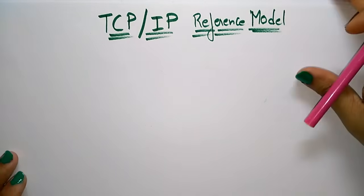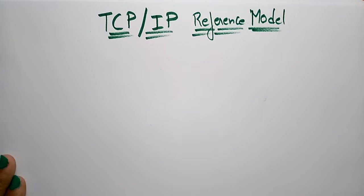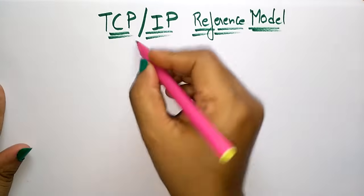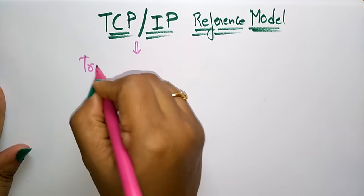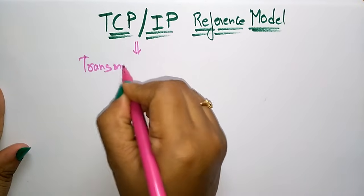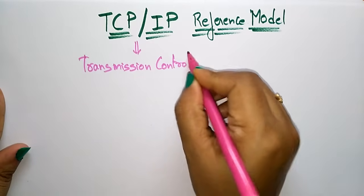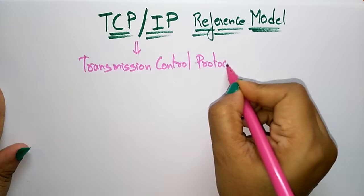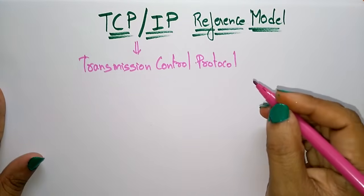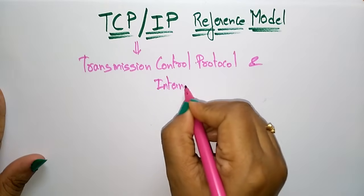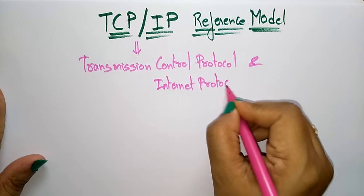Coming to the next topic in computer networks: the TCP/IP reference model. In the previous video I explained about the OSI reference model. Now let us see what is this TCP/IP reference model. TCP stands for Transmission Control Protocol and IP means Internet Protocol.